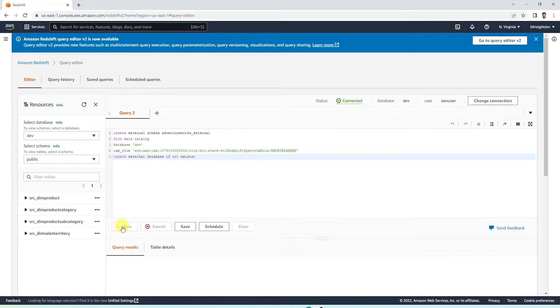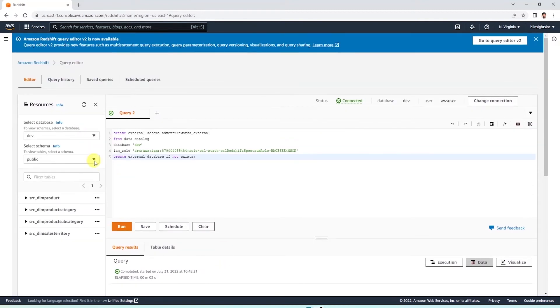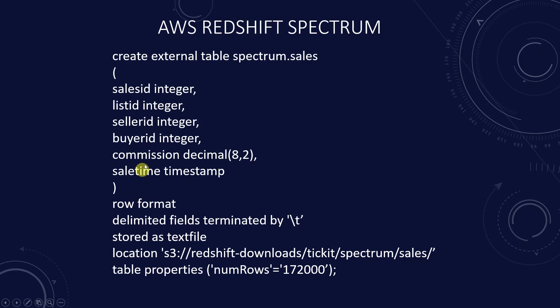Once the schema is created, we can go ahead and start creating external tables in this schema. To create an external table, we must be the owner of the external schema or a super user. To create an external table, we run the following create external table command.